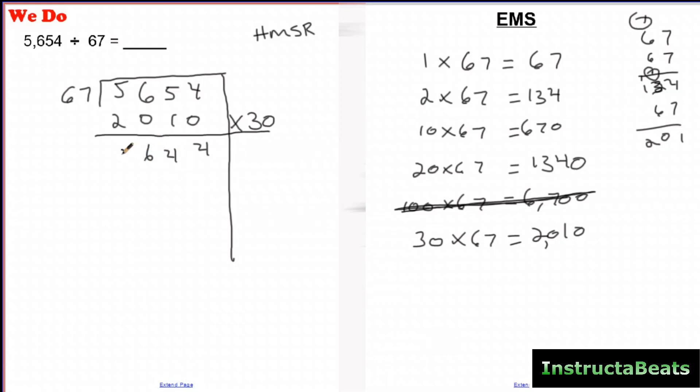There we go. And I get 3,644, which obviously is not less than 67. I'm going to use another group of 30. So that's going to be 2,010. And there we go. I'm going to get 1,634 left.